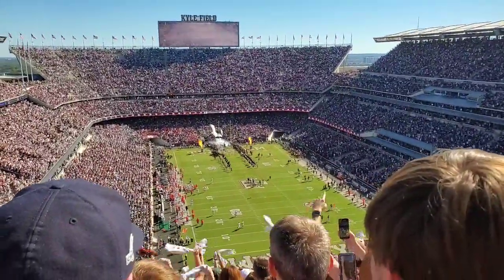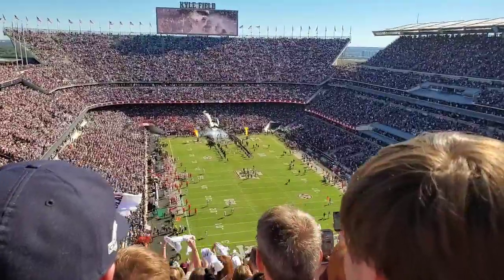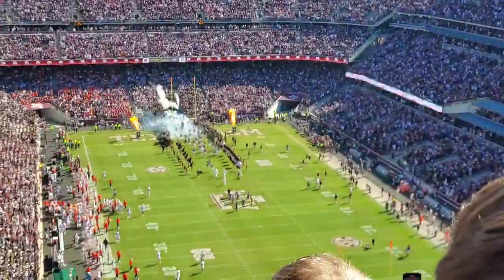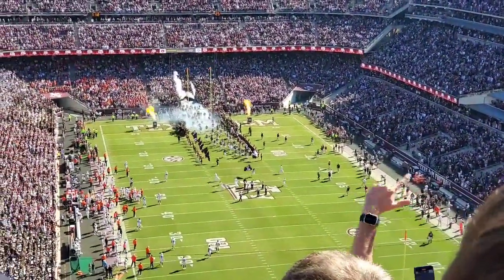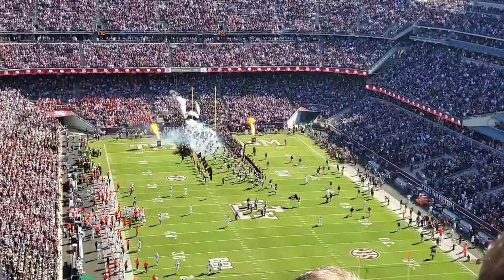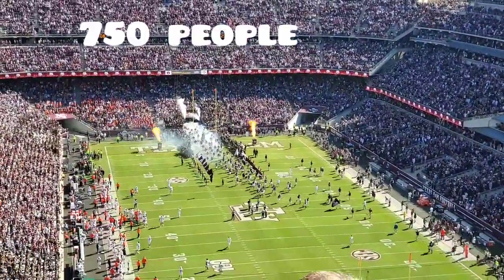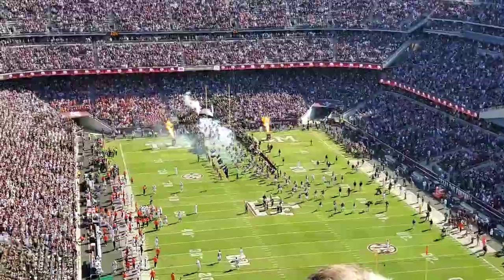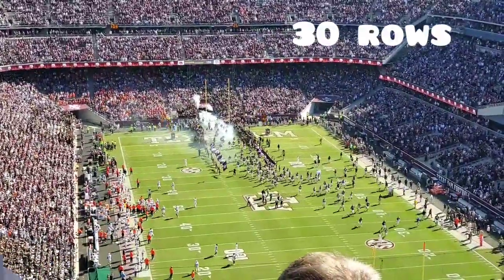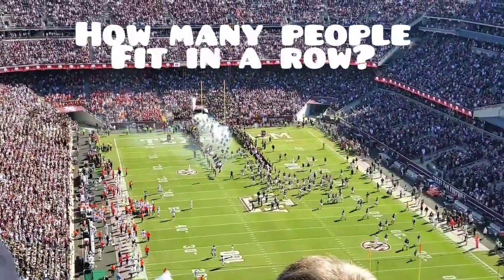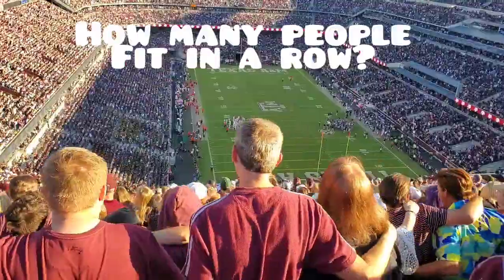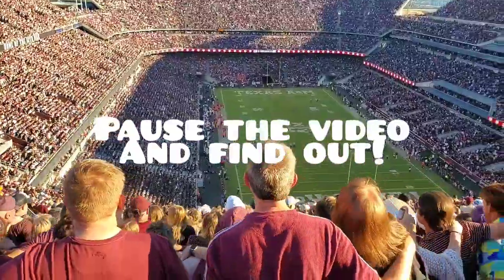Okay, let's do some real life examples of division that you can find at a football stadium. So in one section of this stadium, there's about 750 people. If they're split up into 30 rows, how many people would be in each row? Pause the video and find out.